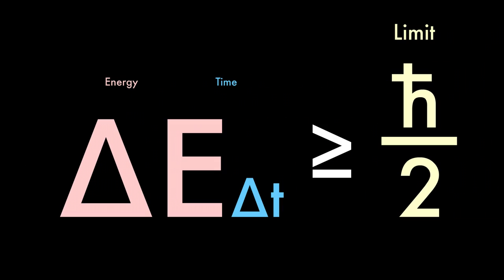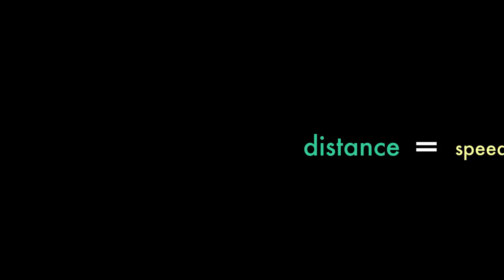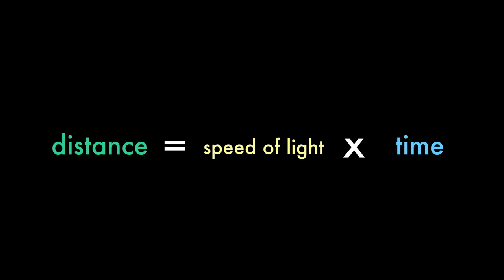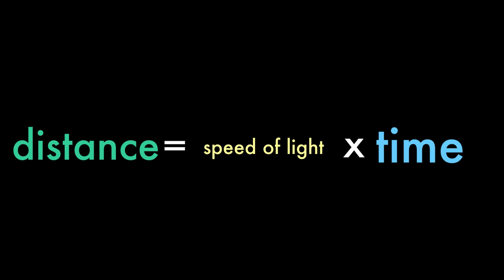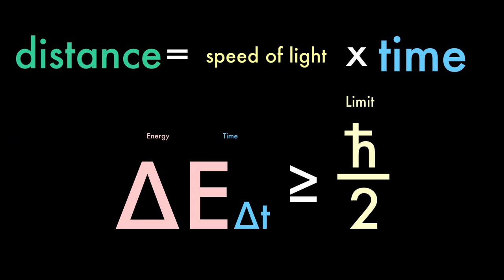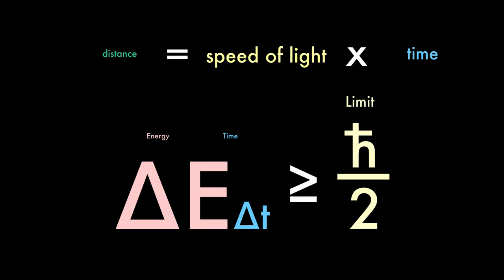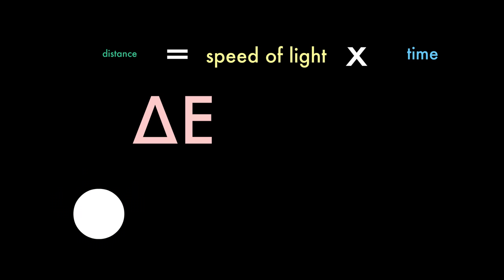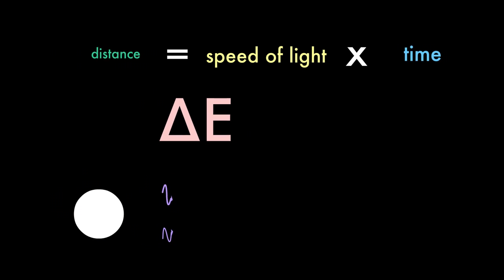How can virtual photons carry different amounts of force over distance, like the gravitational force does? The more energy within a virtual photon, the less time it can exist, due to the uncertainty principle. Since virtual photons travel at the speed of light, the time traveling the speed of light will determine its distance. Therefore, the more energy within a virtual photon, the less distance it can travel.